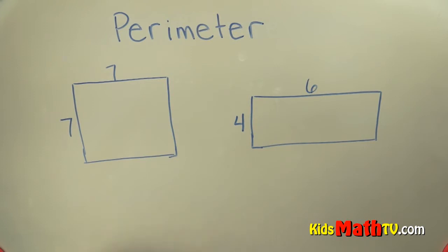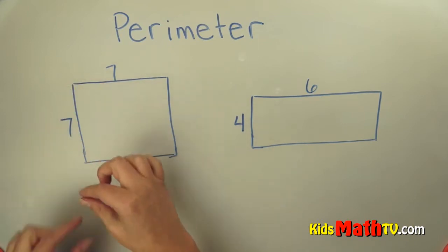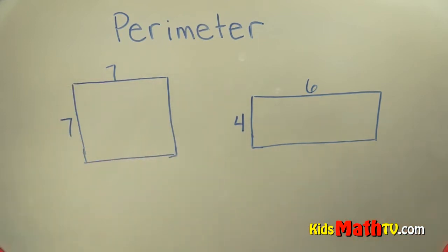So here we have a square. If I were to take a piece of string and lay it down and go around this figure and pull that string out, then how long would it be?